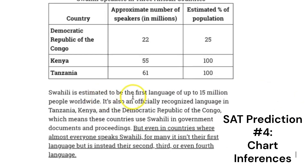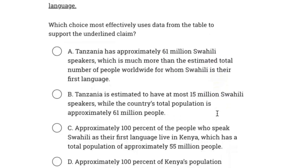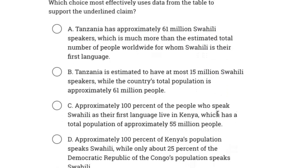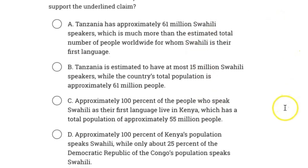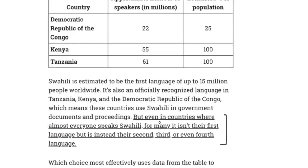The passage says Swahili is estimated to be the first language of up to 15 million people worldwide. It's also the officially recognized language in Tanzania, Kenya, and the Democratic Republic of the Congo, which means these countries use Swahili in government documents and proceedings. But even in countries where almost everyone speaks Swahili, for many it isn't their first language, but is instead their second, third, or even fourth language. Make sure you have this table in mind when we read the question, which says: which choice most effectively uses data from the table to support the underlying claim? Pause the video and try to answer the question by yourself.